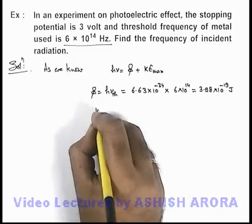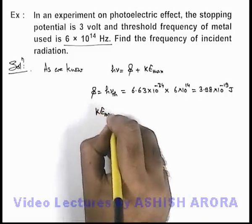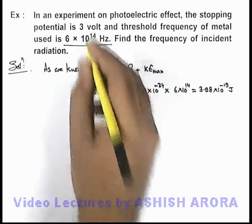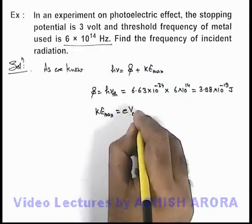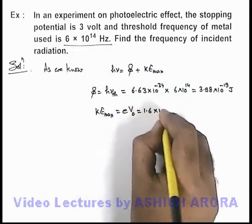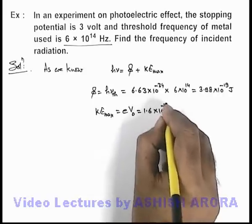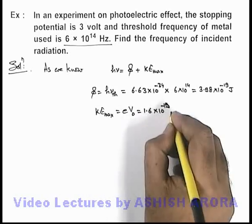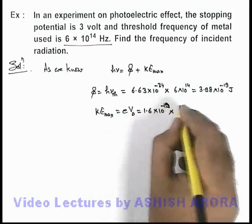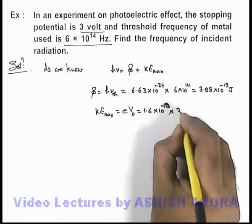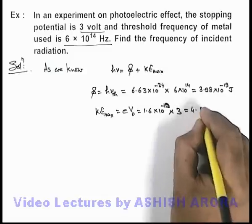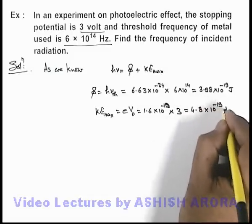And the maximum kinetic energy, we know it is stopped by the stopping potential. It can be written as e V naught, so it is 1.6 into 10 to the power minus 19 joule, which is the charge of electron, multiplied by the stopping potential which is 3 volts. So this is 4.8 into 10 to the power minus 19 joule.